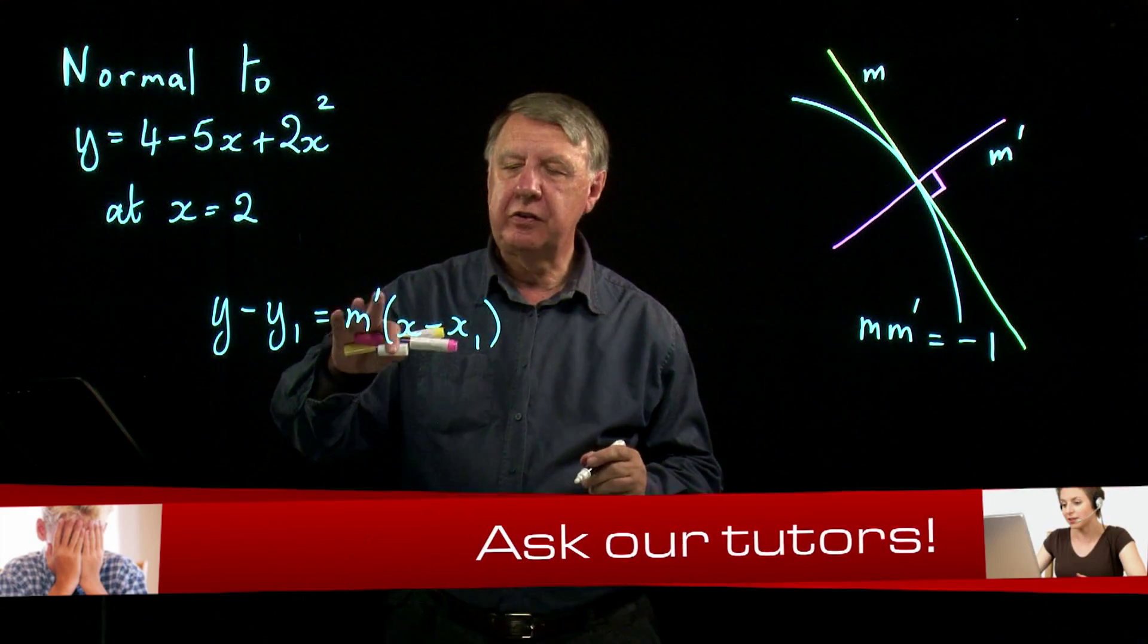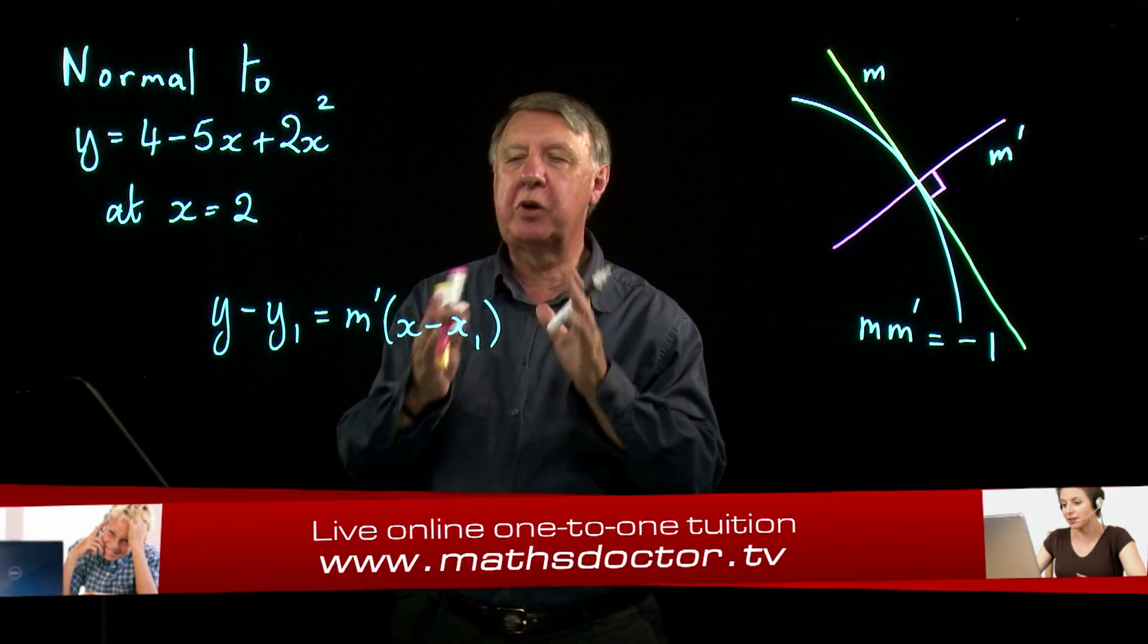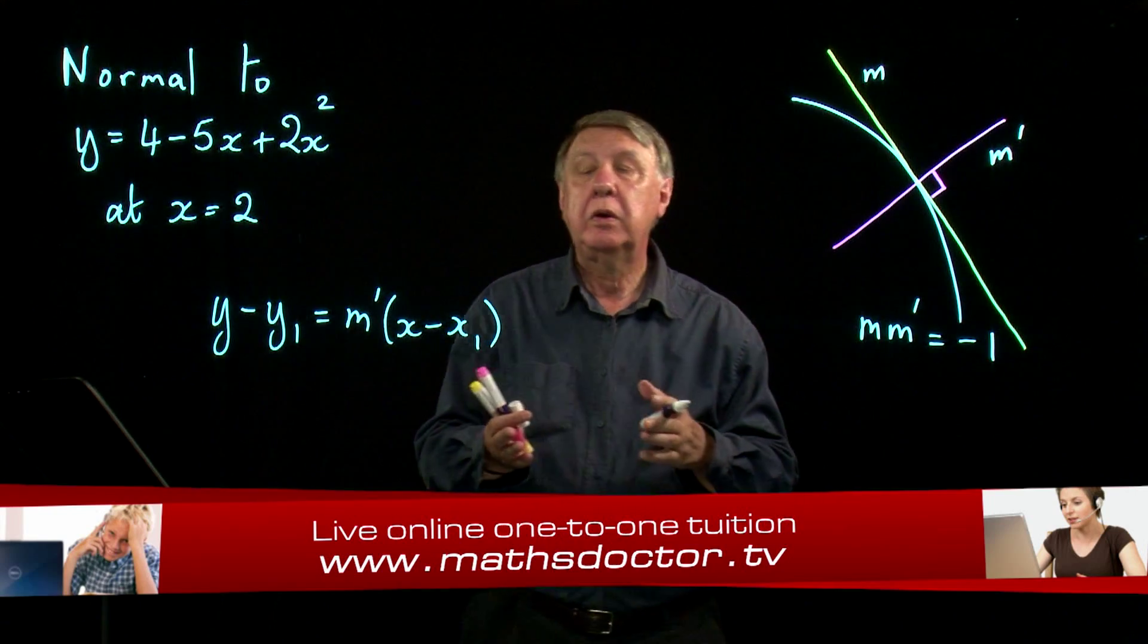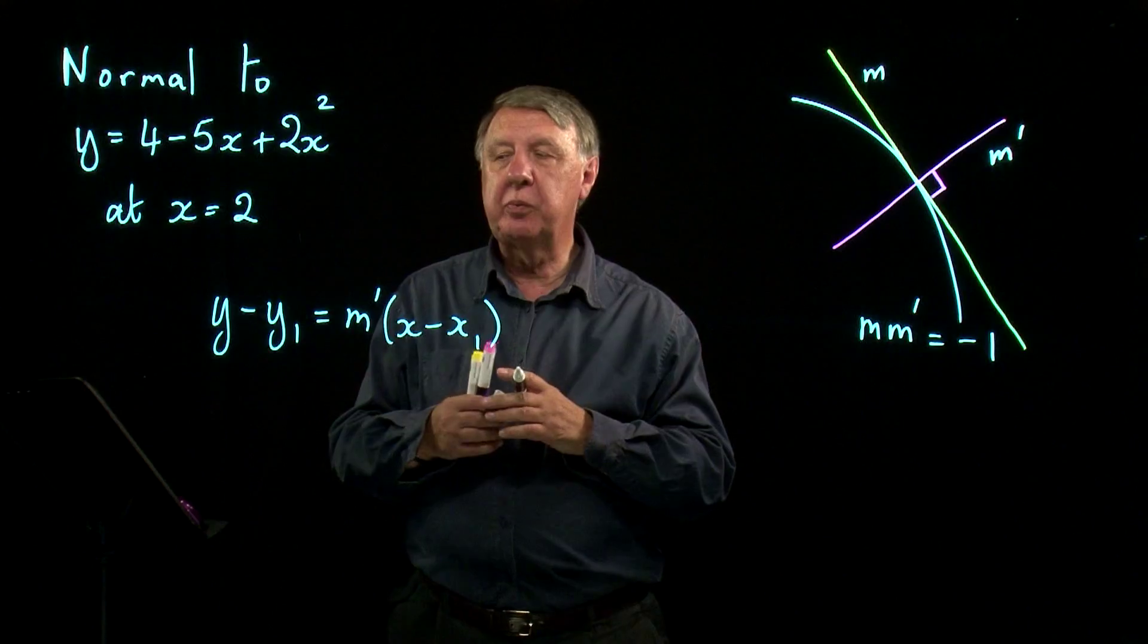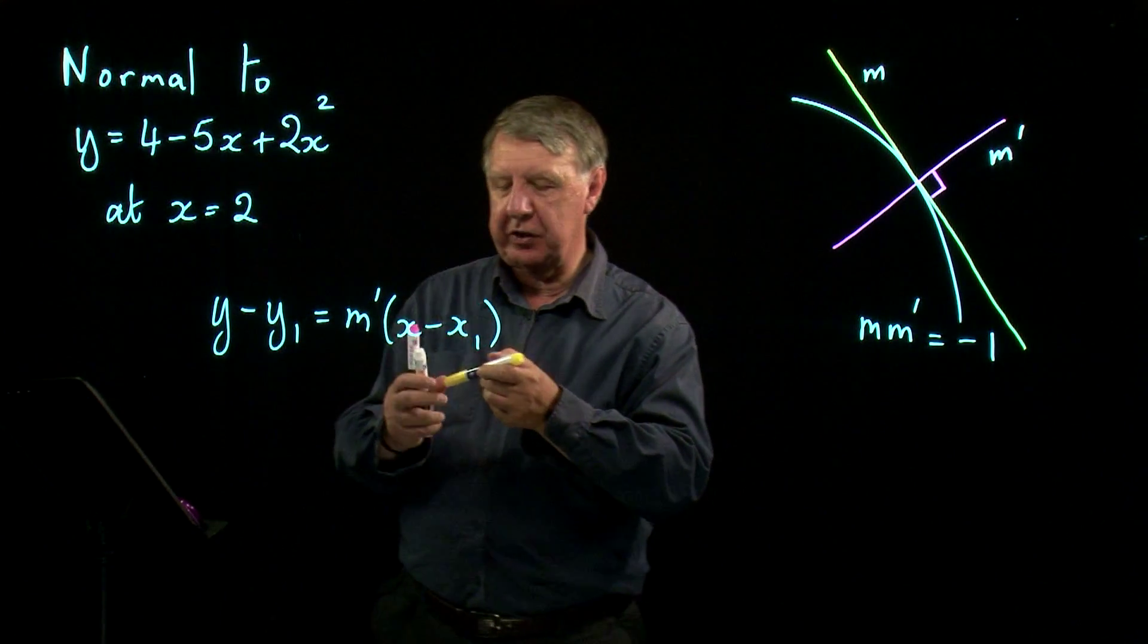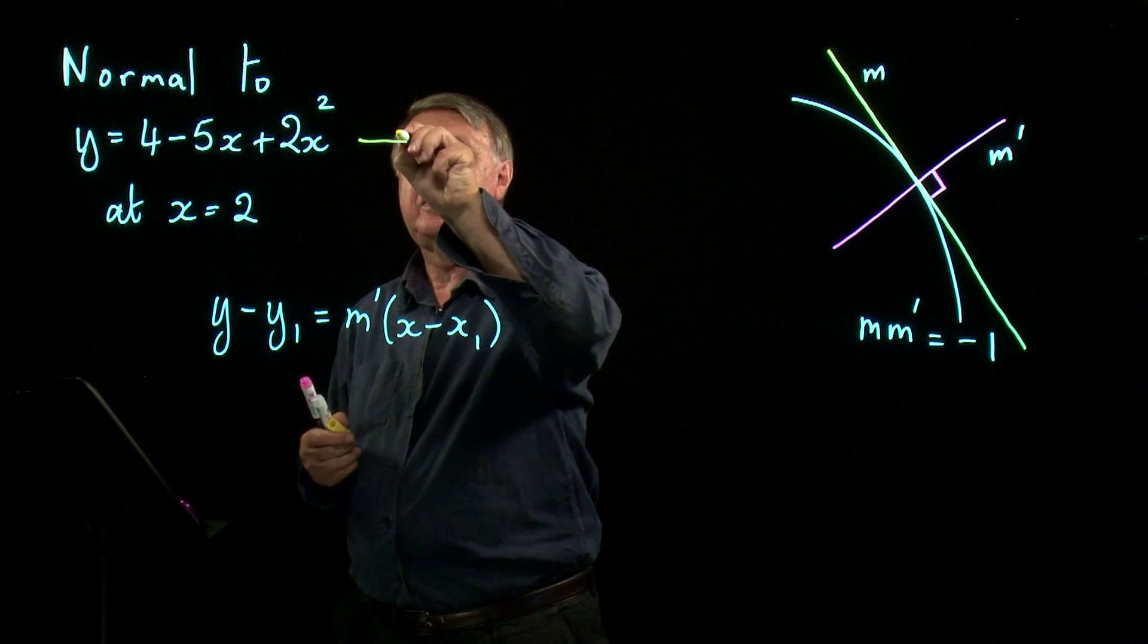So I think it's useful to put the dash in there. It reminds us that we're not going to use m, and m is what we normally find from dy by dx. So let's start off then, we differentiate this function.